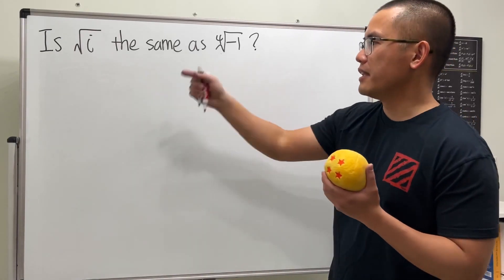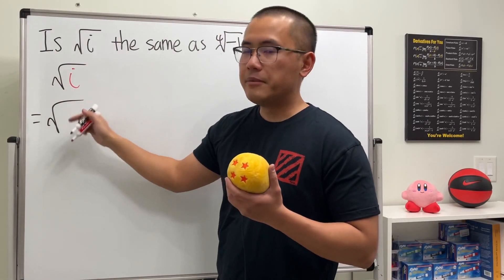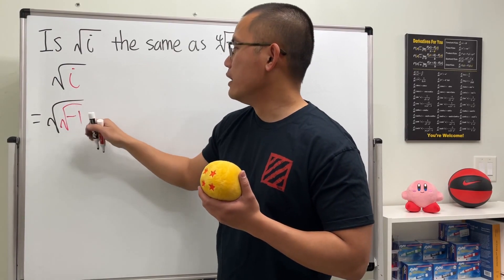why people compare this. First, let's take a look at square root of i. Usually people say i is the same as square root of negative one, so we have square root of square root of negative one.